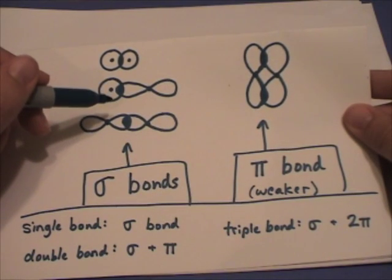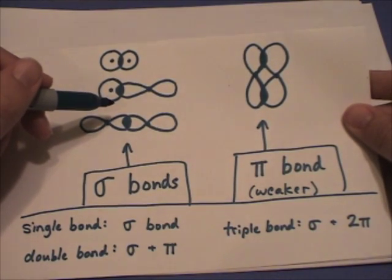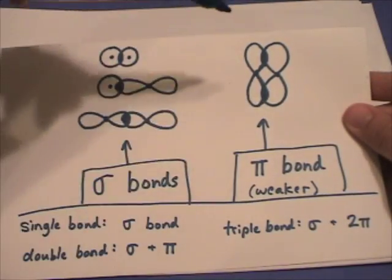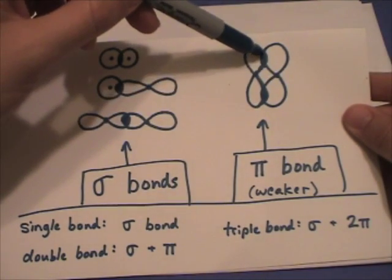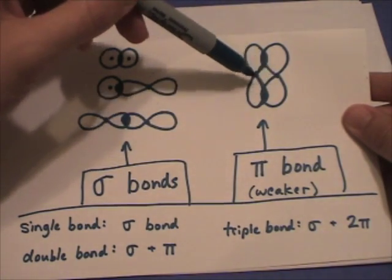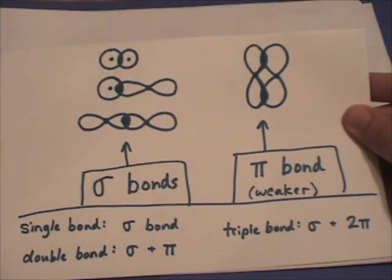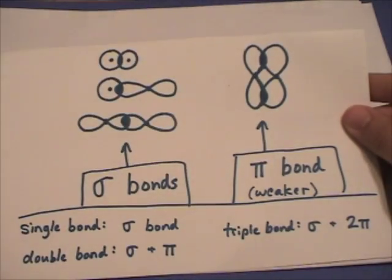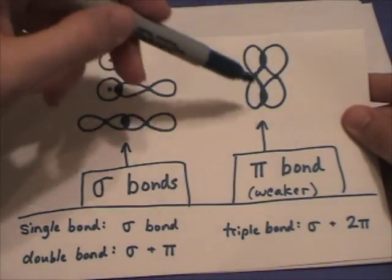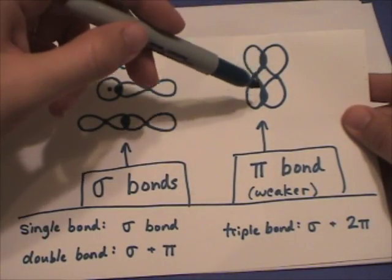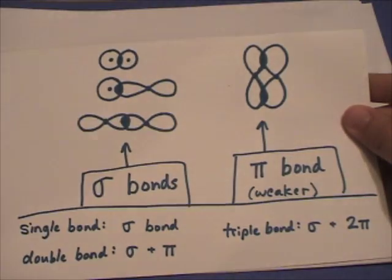All single bonds are sigma bonds. Pi bonds occur when the overlap is above and below the two nuclei, and it's not directly between it. Pi bonds are weaker than sigma bonds.